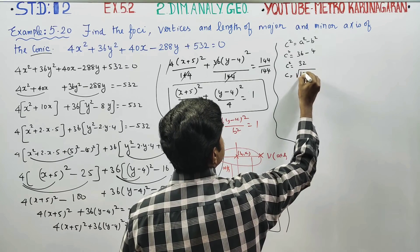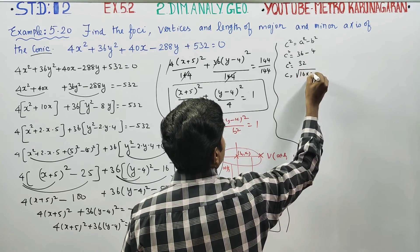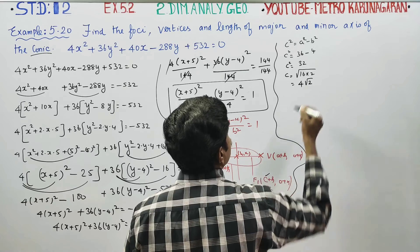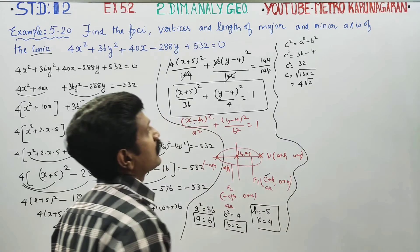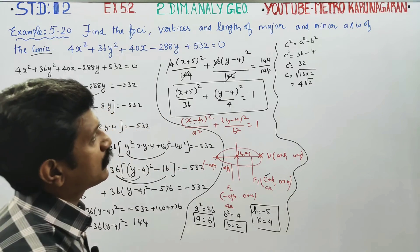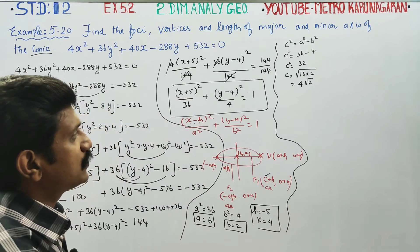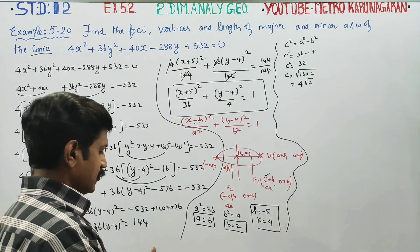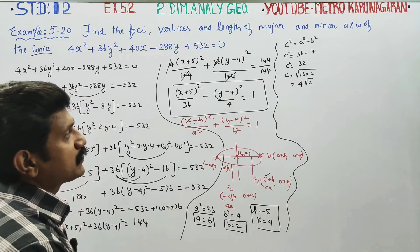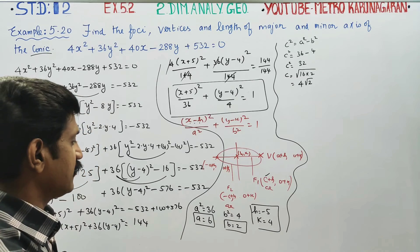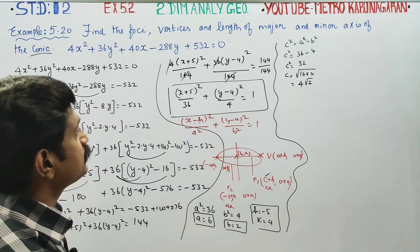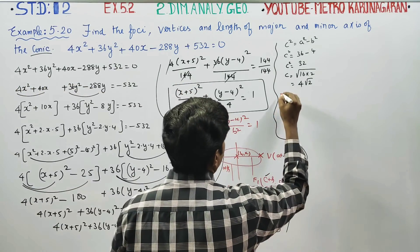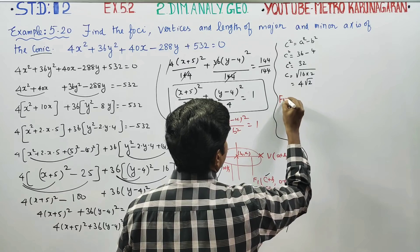Now finding c: c² = a² − b² = 36 − 4 = 32, so c = √32 = 4√2. Therefore c = 4√2. Now we can enter the foci calculation.